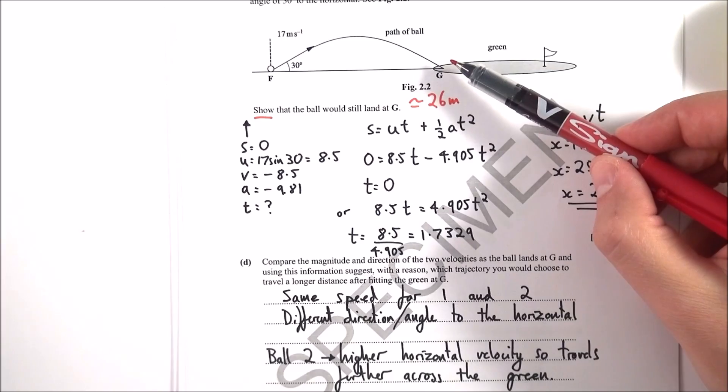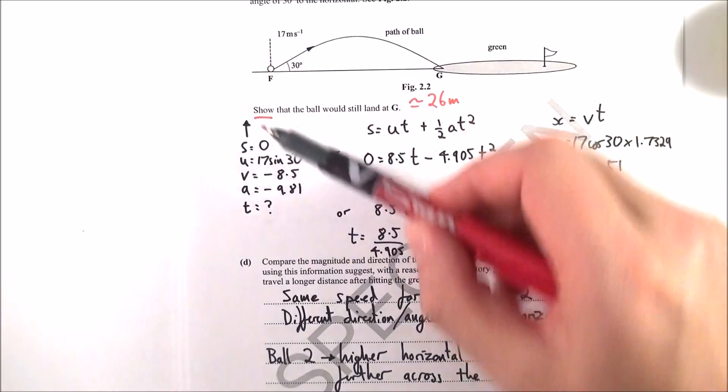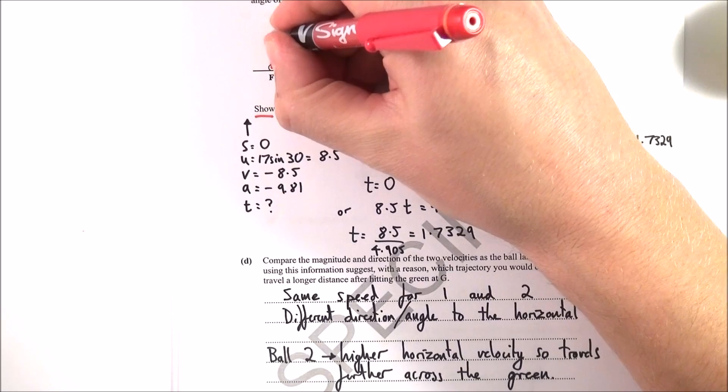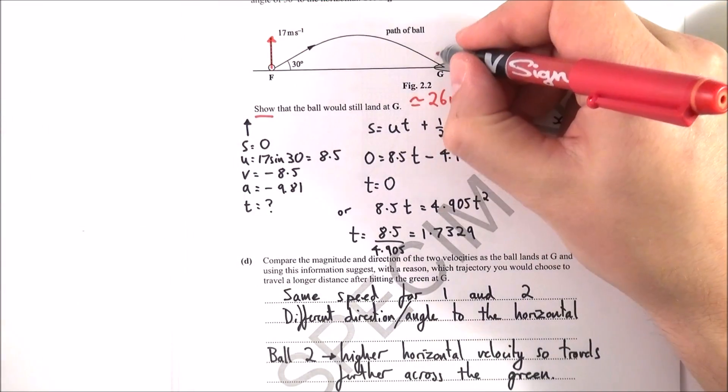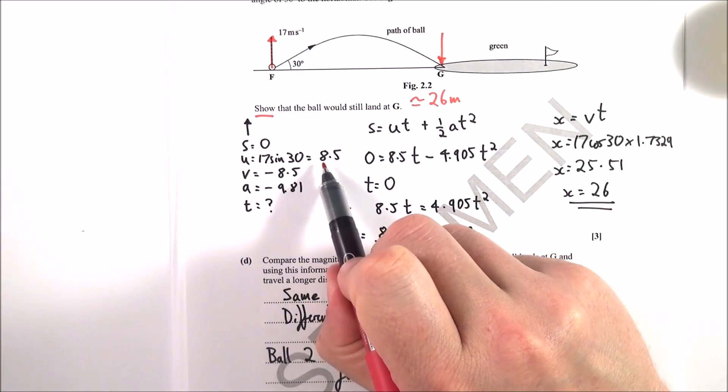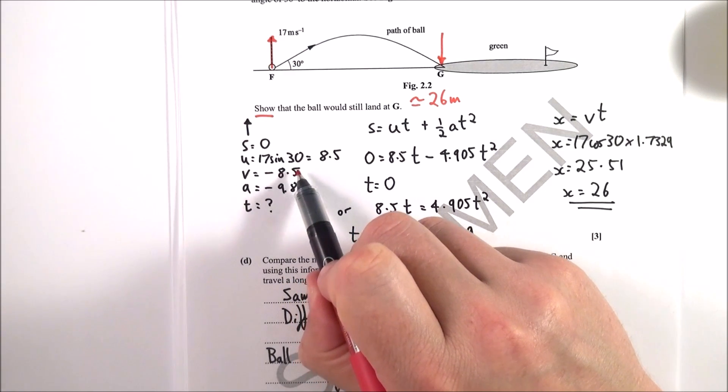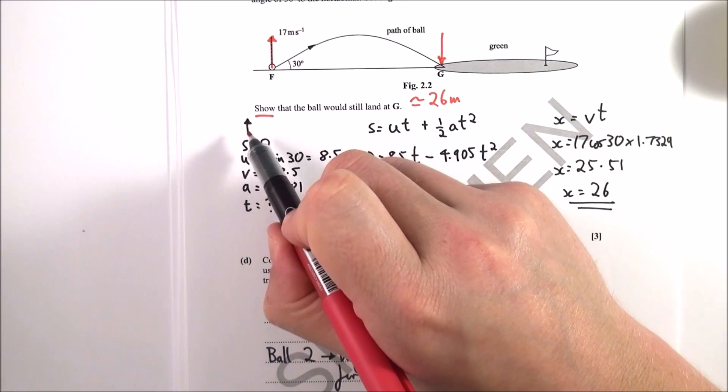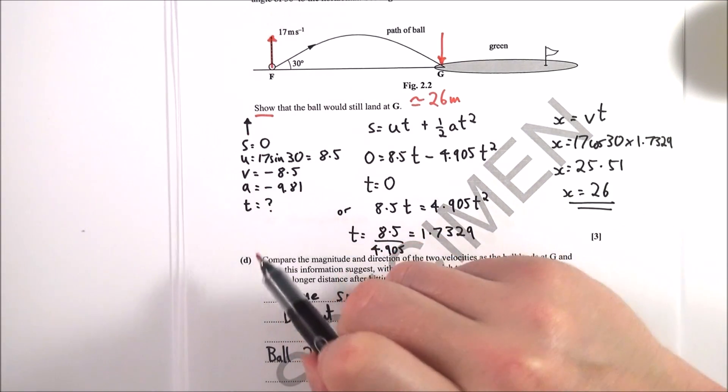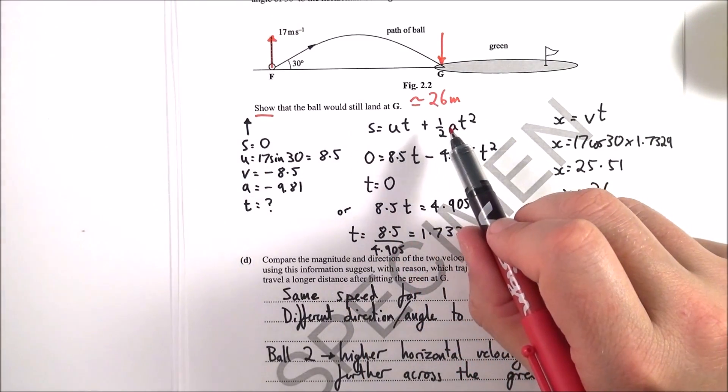So between F and G, we know that the total vertical displacement is equal to zero because it starts at ground level and it ends at ground level. We know that the velocity initially upwards was equal to 17 sin 30, which is 8.5 meters per second. So that's the initial velocity vertically. And we know the velocity at the end must be the same magnitude but in the opposite direction, and therefore if that's 8.5 upwards initially, it must be coming down with minus 8.5 meters per second at the end. Again, upwards is my positive direction. I know that the acceleration is 9.81, but I don't know my time. So again, what I'm trying to do is I'm trying to find time, and I use S equals UT plus a half AT squared.